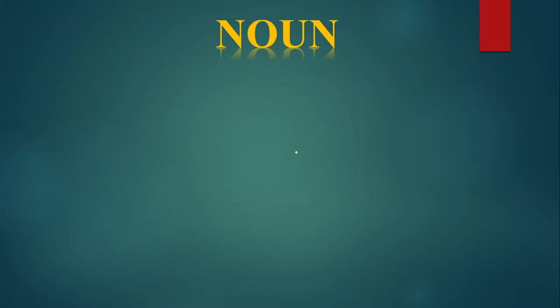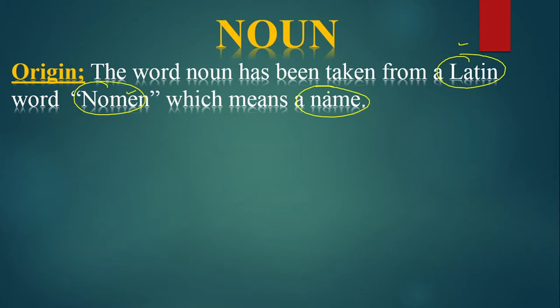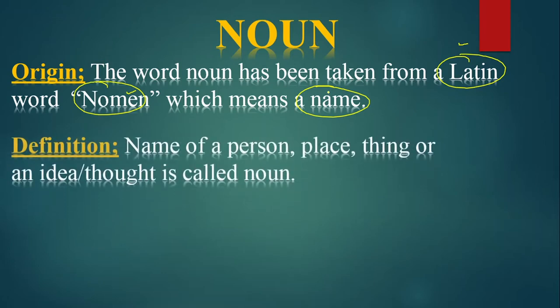We will discuss the origin of noun first. The word noun has been derived from a Latin word — Latin is the language it is taken from — and that Latin word is 'nomen.' Nomen means 'a name.' So noun is derived from the Latin word nomen, which means a name. Now, the definition of noun: noun is the name of a person, place, thing, or an idea.